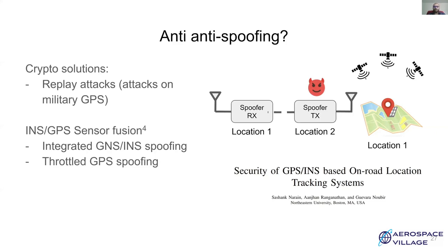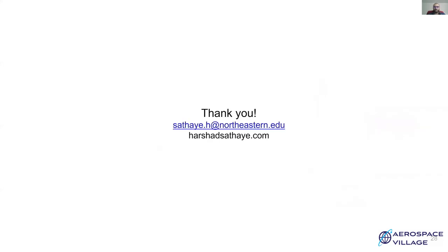Now, as you have seen the countermeasures and how trivial it is to spoof GPS, it's important to note that GPS being a unidirectional system, it is not trivial to come up with solutions which can secure or safeguard GPS against a plethora of these spoofing attacks. Thank you.